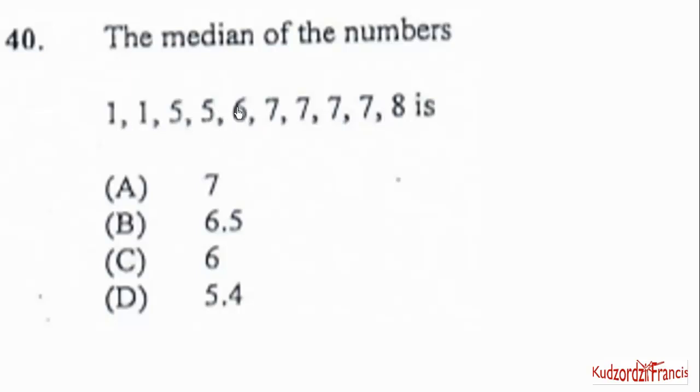So we have 1, 2, 3, 4. So the 5th item is this. The 6th is this. So the average of these 2 will be (6 + 7)/2. And that will be equal to 13/2, which is 6.5. Therefore the correct answer is B.